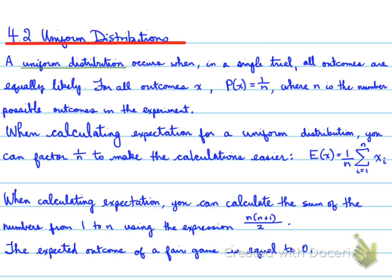When calculating expectation for a uniform distribution, you can factor 1 over n to make the calculations easier. So we have basically the sum of the values from 1 to n multiplied by 1 over n.